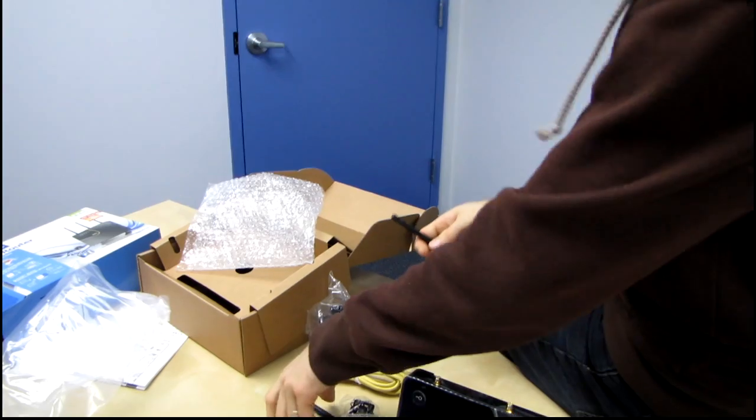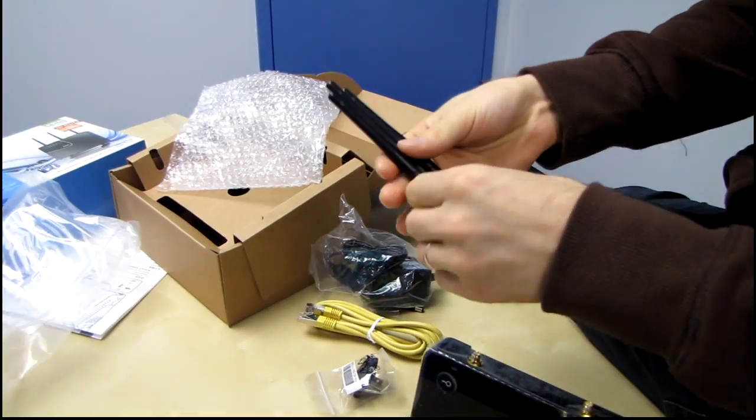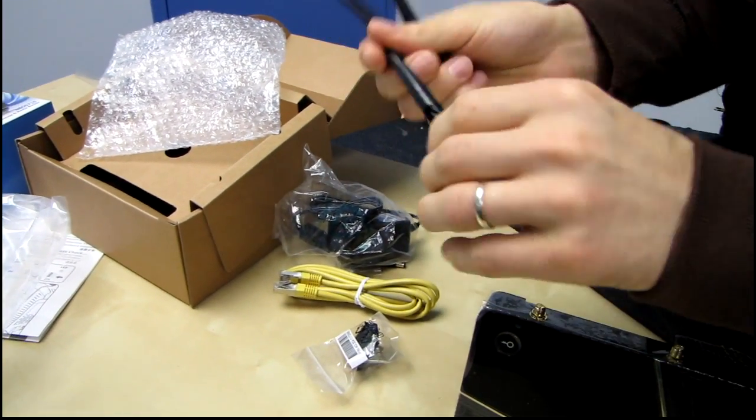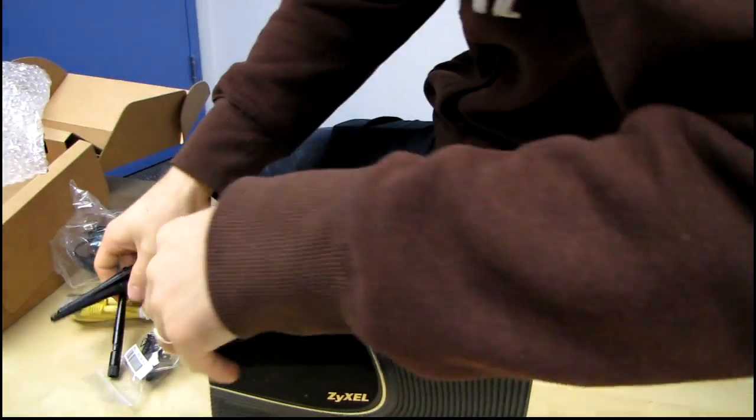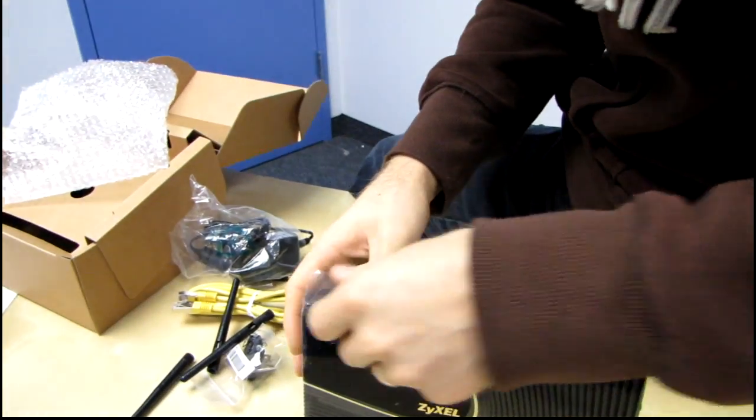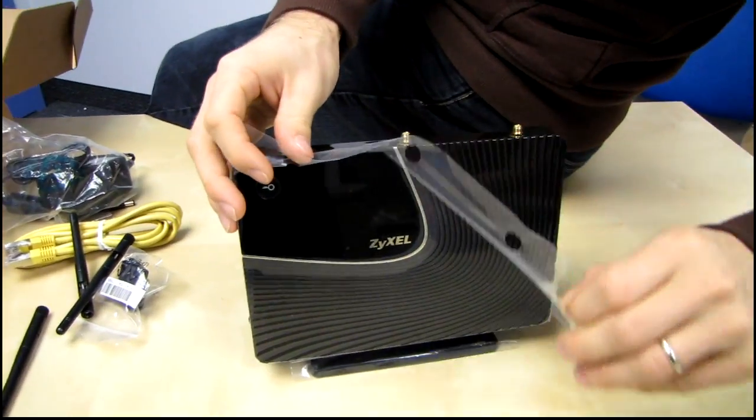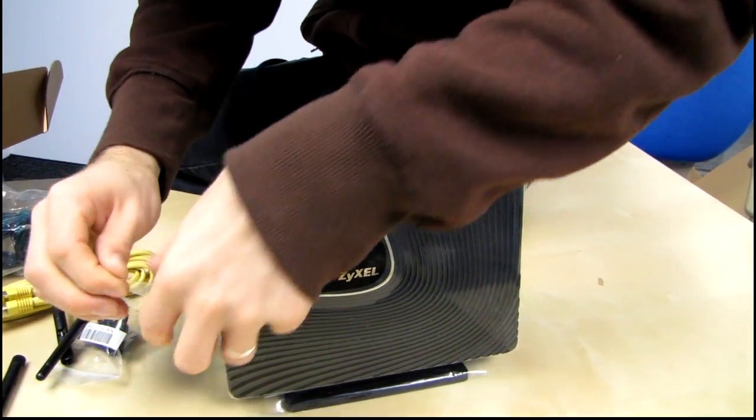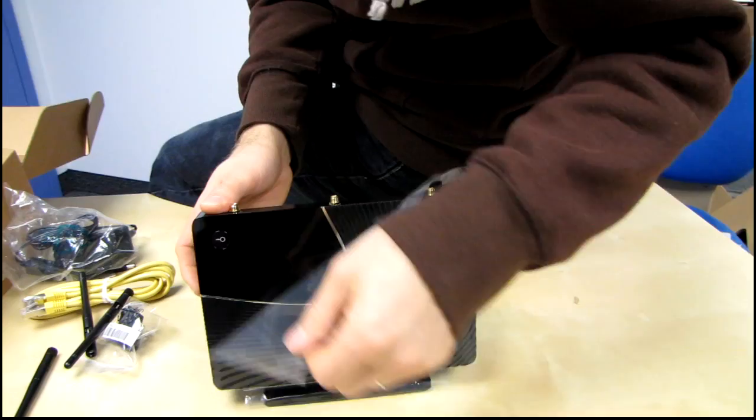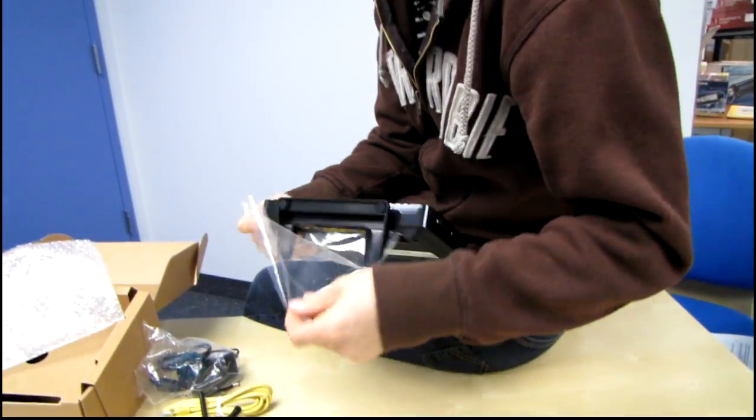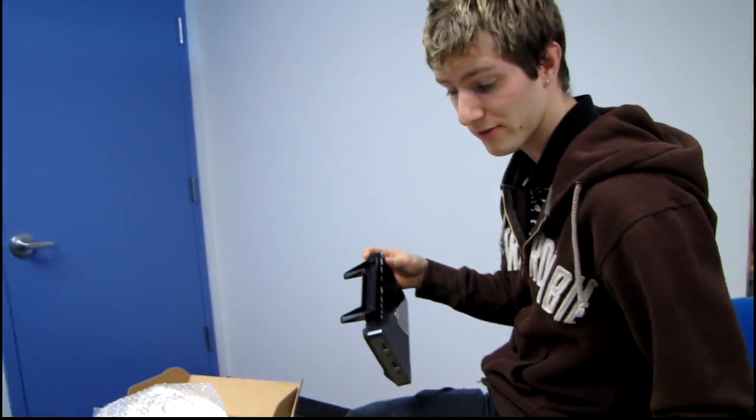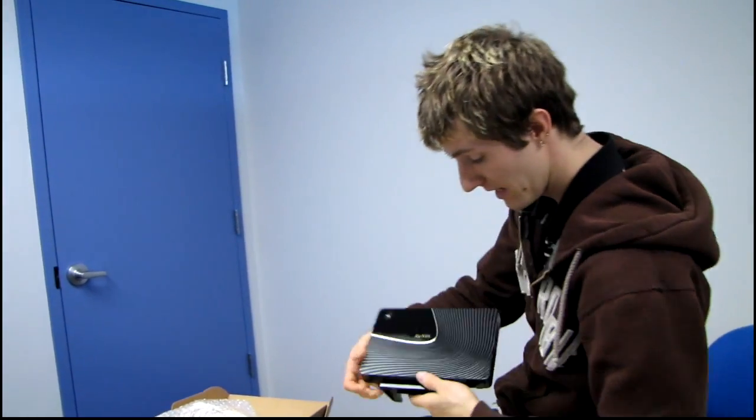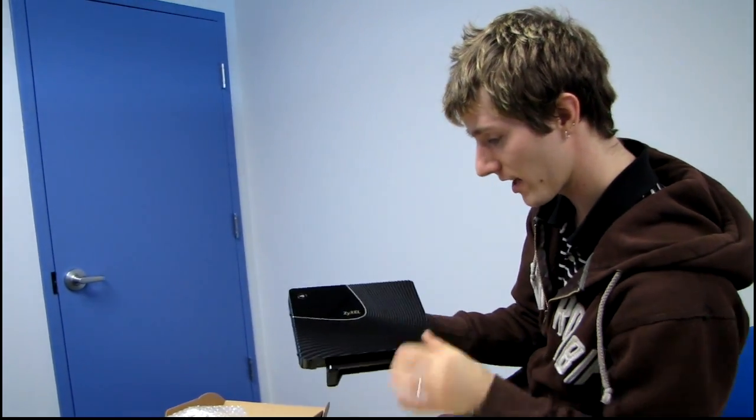We've got three included antennas. I'm not going to put those on yet because I'm going to take the plastic layer off first. This has kind of a neat look to it. I mean, I've never really believed that the router should be like a fashion statement, but if it has to not look stupid or you have to see it, then it might as well look kind of different.